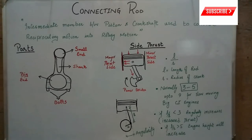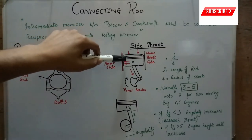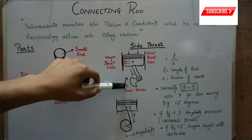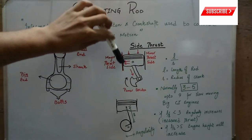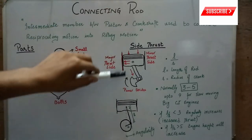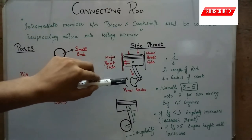Assalamu alaikum, hello guys. In this video I will be talking about connecting rods. Connecting rod is an intermediate member between the piston and the crankshaft of the IC engine, and it is used to convert the reciprocating motion of the piston into the rotary motion of the crankshaft or vice versa.